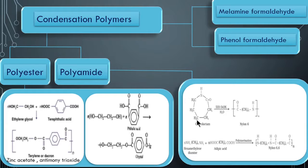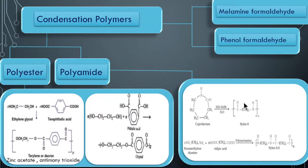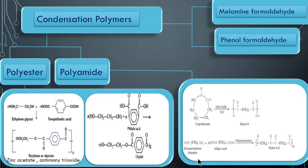Now polyamide. Two important compounds: Nylon 6 is made from caprolactam. You can remember the structure of caprolactam and how this compound is formed - when this bond breaks, this structure is formed. Water is also present here - this question was also asked once. Nylon 6,6 is made from hexamethylene diamine and adipic acid.